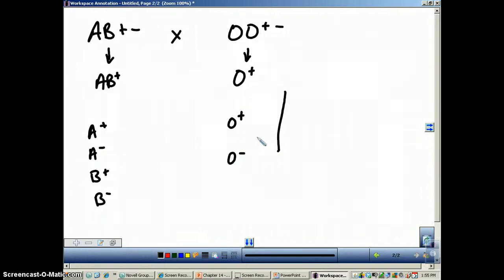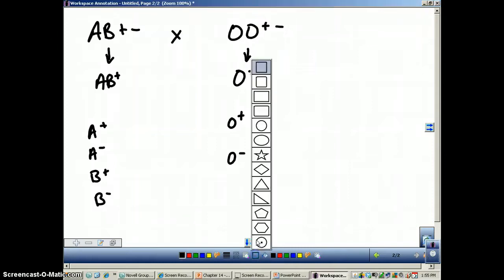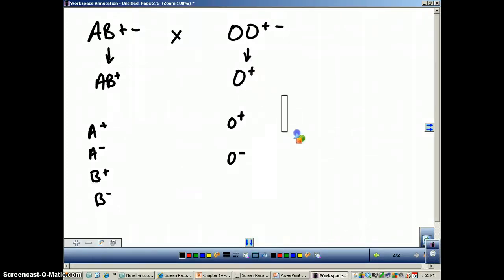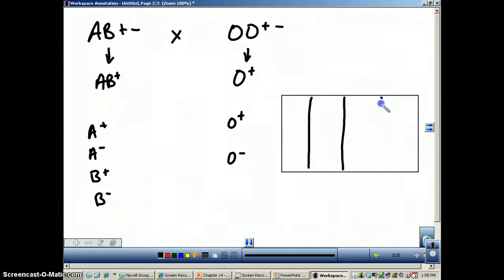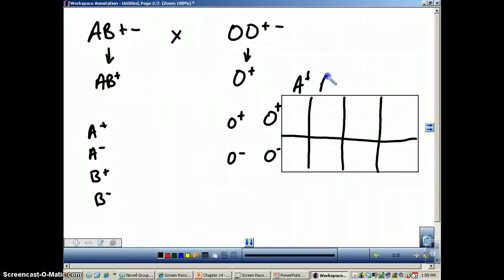So if we do our Punnett square, let's make it square. That's a lot better than what I could ever draw. Okay, one, two, three. They're close enough for government work. Alright, so we'll put the O positive there, the O negative here, A positive, A negative, B positive, B negative. Now it's just plug and chug.